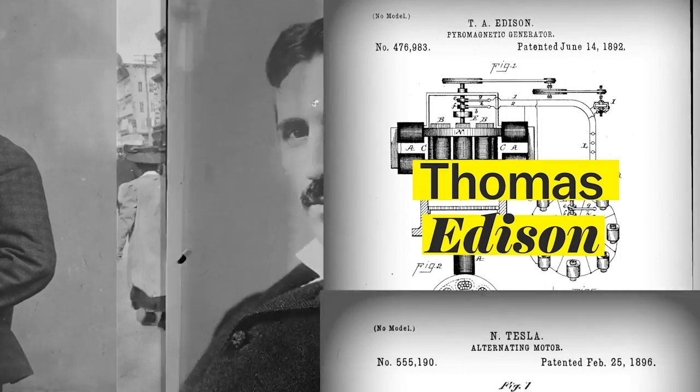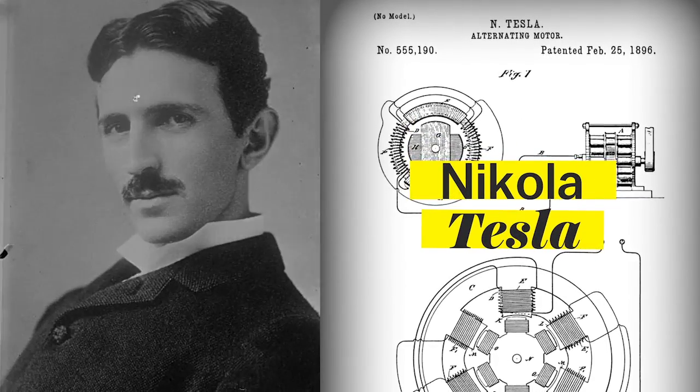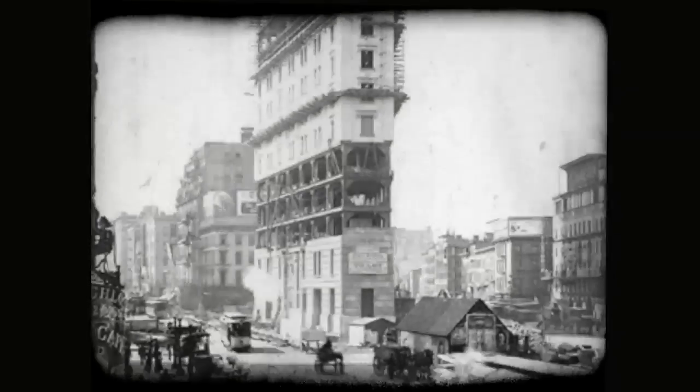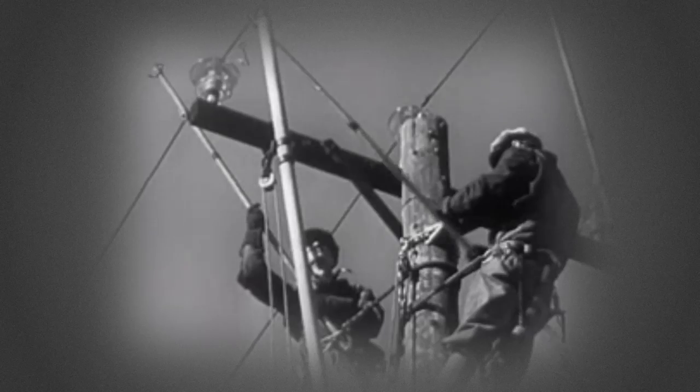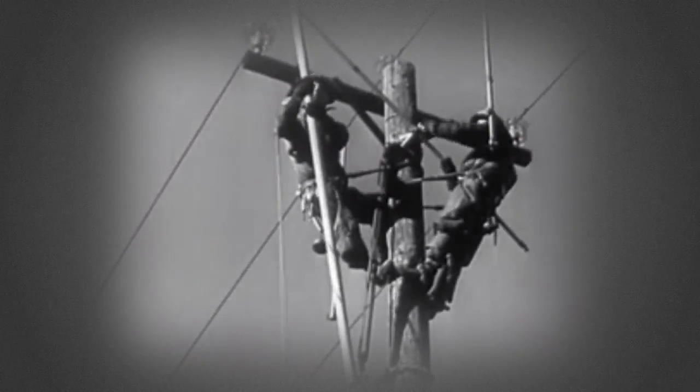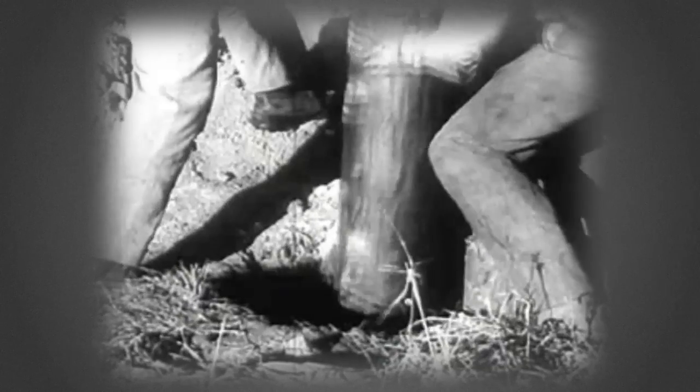There was Thomas Edison, he was all about DC power, and then there's Nikola Tesla, he was your AC guy. They're totally duking it out. Every time a new building goes in, it's kind of: oh, what's gonna happen? Are they gonna use AC, are they gonna use DC? And what happens eventually is that AC power is much better at traveling long distances, so ultimately the entire power grid gets set up to spread AC power.